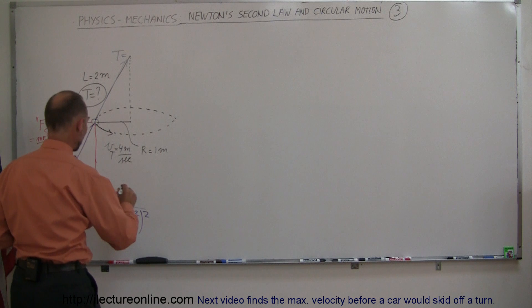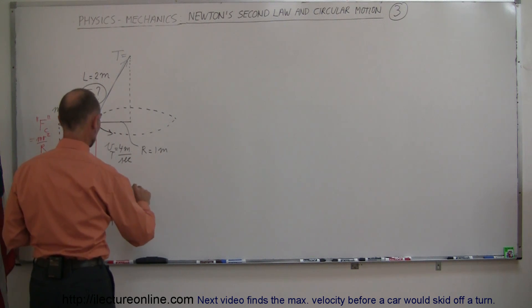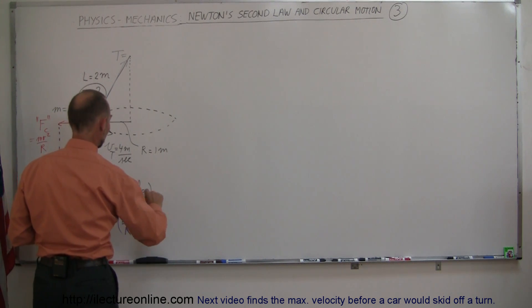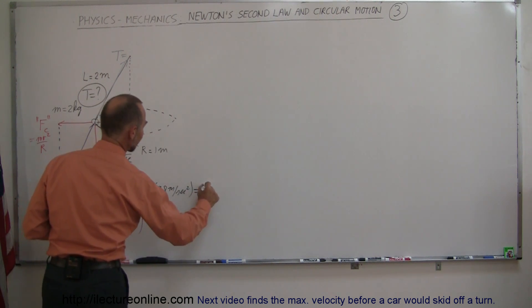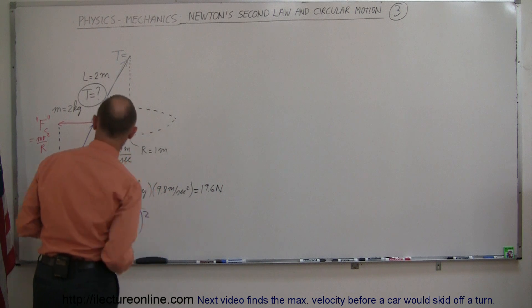First, we need to find the weight. mg equals 2 kilograms times 9.8 meters per second squared, which equals 19.6 newtons.